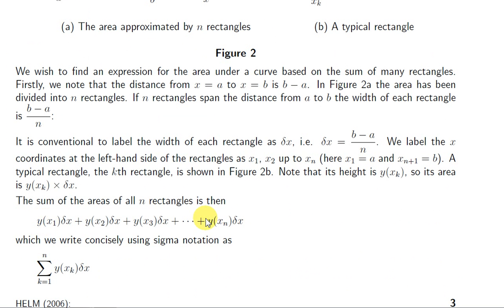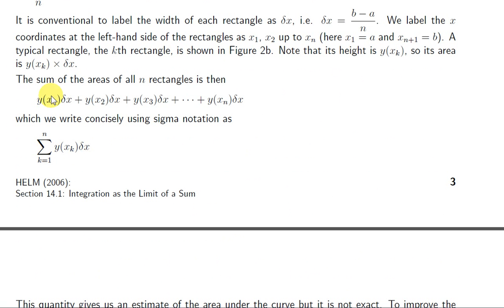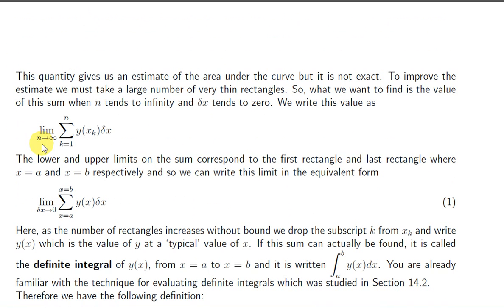We sum the areas of rectangles, and that gives us an approximation to the area under the curve. We could use sigma notation to represent this sum — summing the subscript k from 1 up to n. When k is 1, we have y of x1 times delta x. When k is 2, we have y of x2 times delta x. And finally, when k is n, we have y of xn times delta x.